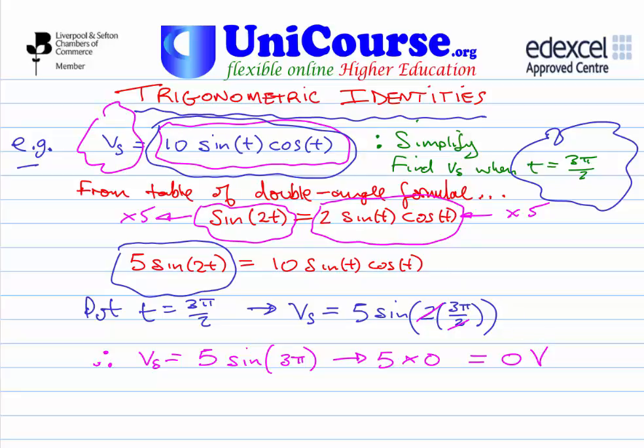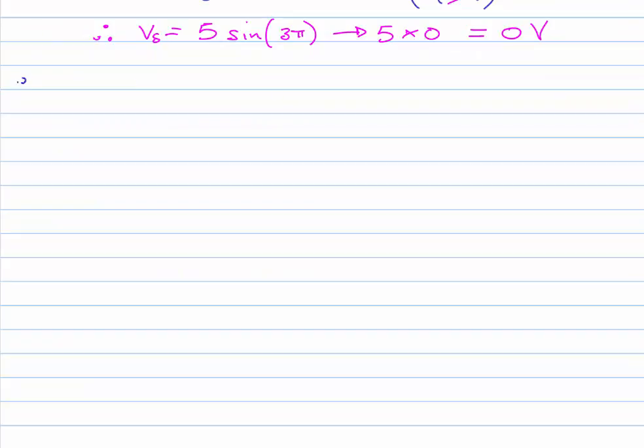Okay, let's now have a look at a second example. Why don't we try to simplify a supply current, is, equal to the sine of i1 times the cos of i2 plus the cos of i1 times the sine of i2. This thing is in amps.